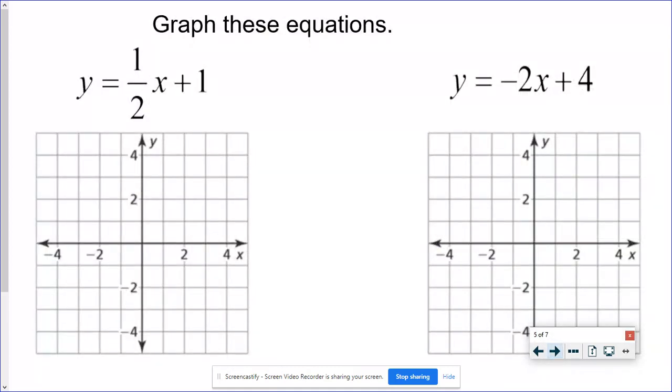So recognizing from a graph and finding those two things that's nice but really today we are focused on I give you an equation you graph it. So for the first problem if it helps you you can absolutely write down the m and the b before you start graphing. For this one the slope is one half. The y-intercept is one right y equals m x plus b.